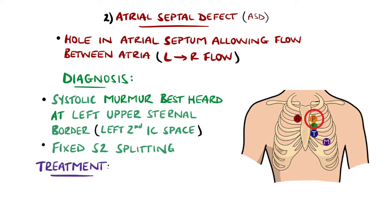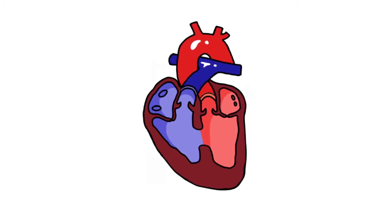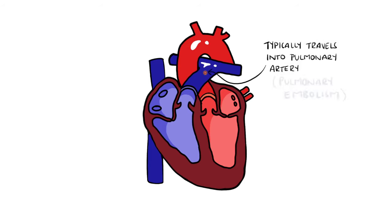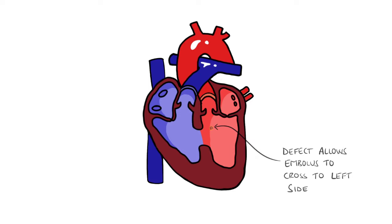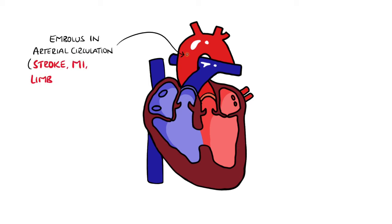Definitive evaluation is done with echocardiography. Some ASDs close spontaneously while others require percutaneous transvenous catheters or open surgery. An important point: when there is a connection between the left and right sides of the heart, blood clots or emboli can cross. A DVT embolus that would normally cause a pulmonary embolism could instead pass through the defect into the arterial circulation, generating arterial embolic events like stroke, MI, or limb and organ ischemia. Similarly, left-sided emboli such as those from atrial fibrillation may cross and generate a pulmonary embolism.